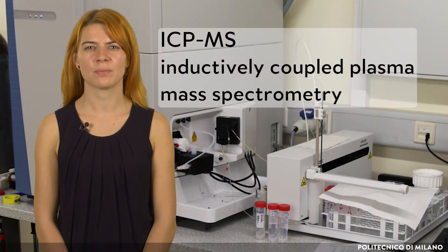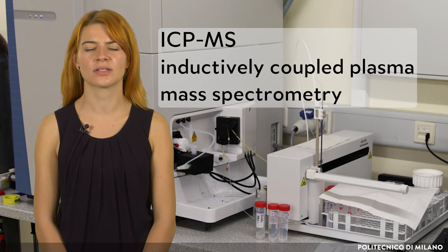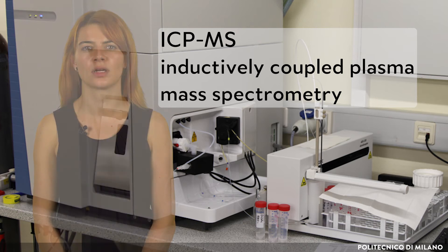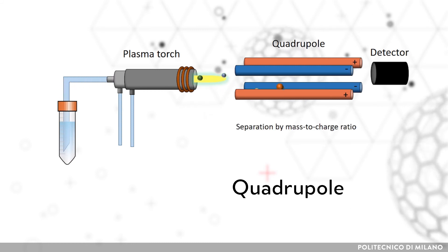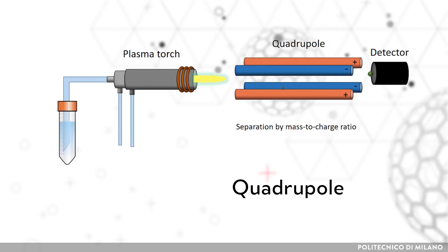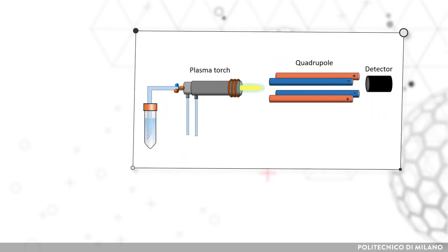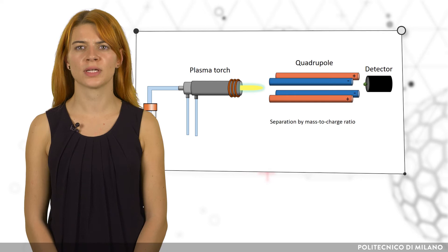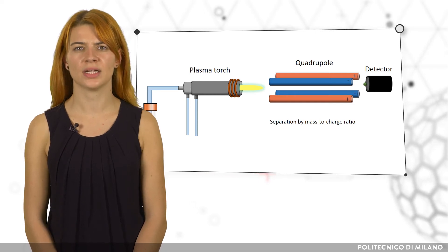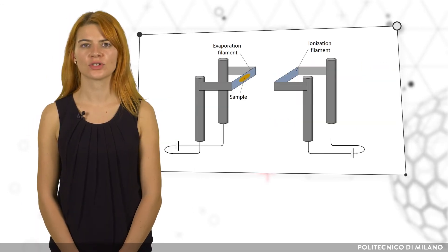For inductively coupled plasma mass spectrometry (ICP-MS), the sample has to be dissolved so that a diluted solution can be atomized and ionized in the plasma. Often, a quadrupole mass analyzer is used for mass separation. By applying oscillating electric fields to four cylindrical electrodes, only ions with a certain mass-to-charge ratio can pass the quadrupole on stable trajectories. ICP combined with a quadrupole mass analyzer offers a robust tool for sensitive quantification of elemental composition as well as precise quantification of trace elements.